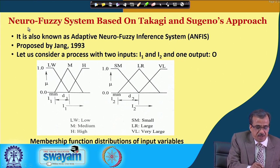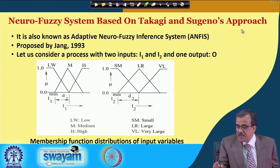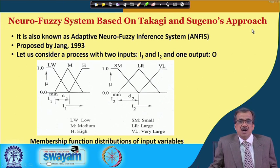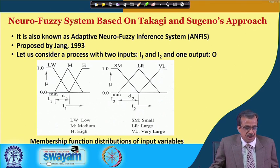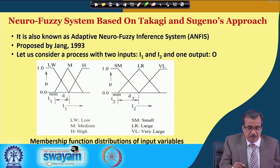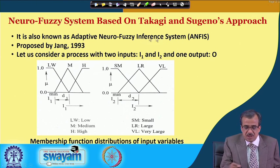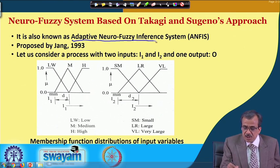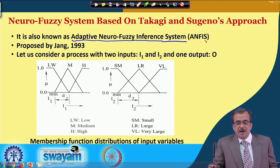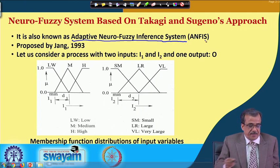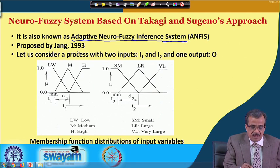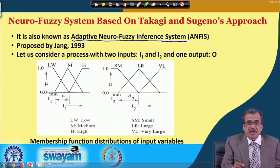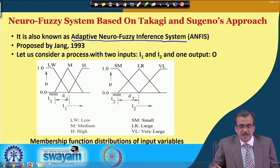The title of today's lecture is Neuro-Fuzzy System based on Takagi and Sugeno's approach. Let us see how to model this Takagi and Sugeno's approach of fuzzy reasoning tool and how to develop the Neuro-Fuzzy System. This particular Neuro-Fuzzy System is very popularly known as Adaptive Neuro-Fuzzy Inference System, that is nothing but ANFIS. The first proposal came in the year 1993 by Zhang, and after that this particular ANFIS has been modified in a number of ways.